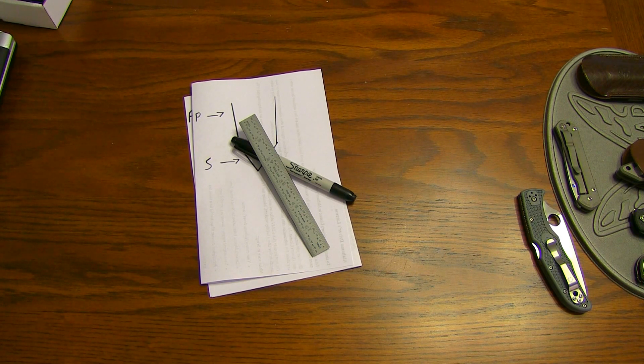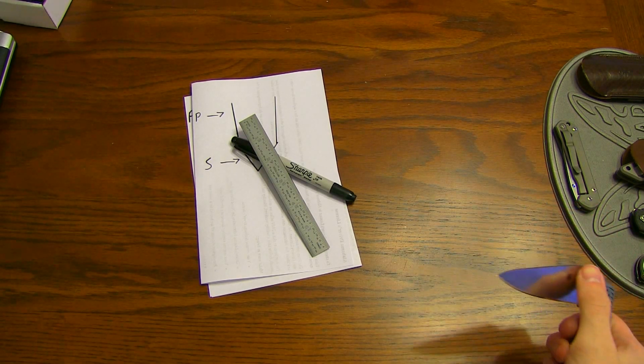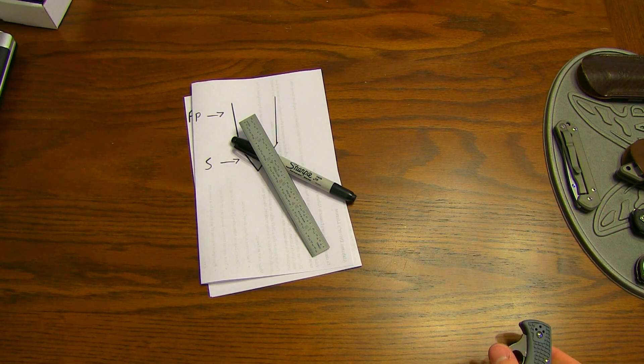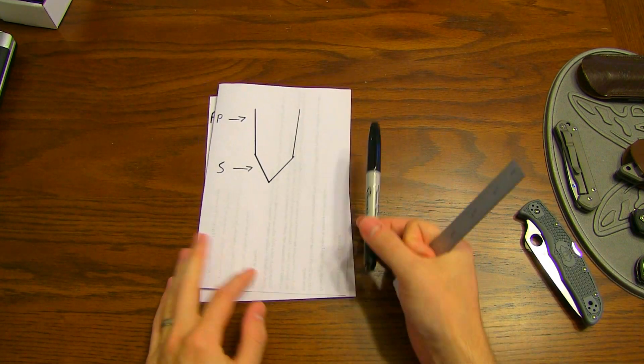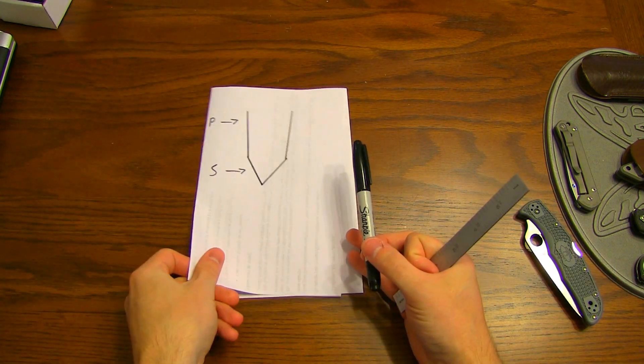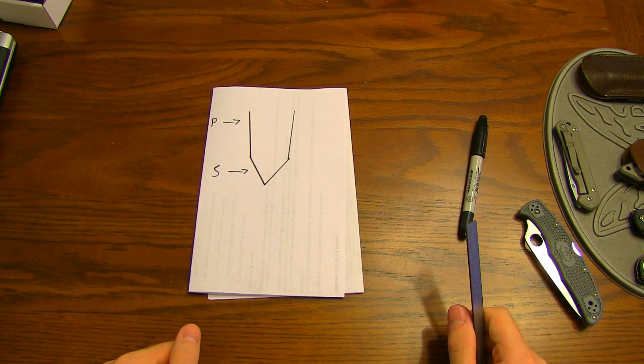Anyway, on to the whole point of this video. I've gotten more than a few requests to explain what a micro bevel is. A micro bevel, I guess I'll just jump right into it, essentially is a tertiary bevel added to a knife edge.